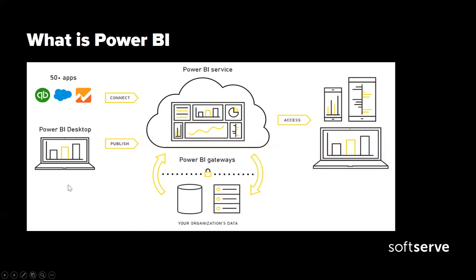Then we have two main items in Power BI: Power BI Desktop and Power BI Service. Power BI Desktop is the free application that you install on your local machine and work with. Usually the common workflow is that you import your data, clean your data, transform your data, build visualizations and reports, and then publish your final work into Power BI Service. So Power BI Desktop is more for development and all the work we need to do with our data.